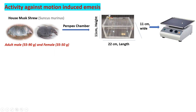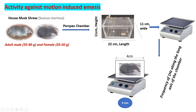This perspex box is attached to the platform of a shaker set. On this platform the perspex box is attached where the house musk shrews are kept. The shaker executes a linear horizontal motion of 4 cm at a frequency of 1 Hz along the long axis of the chamber.